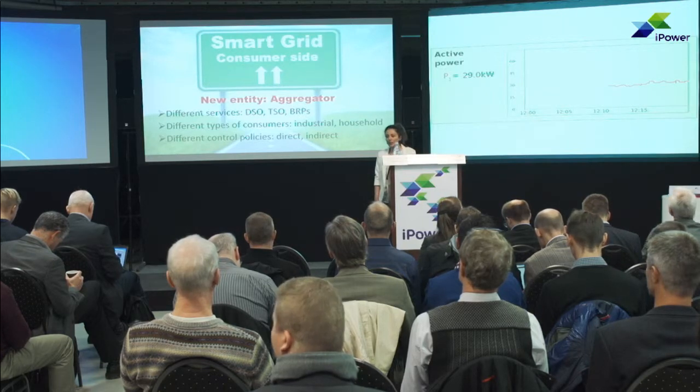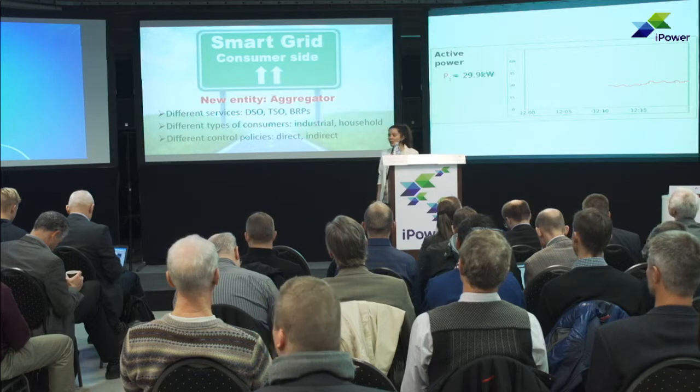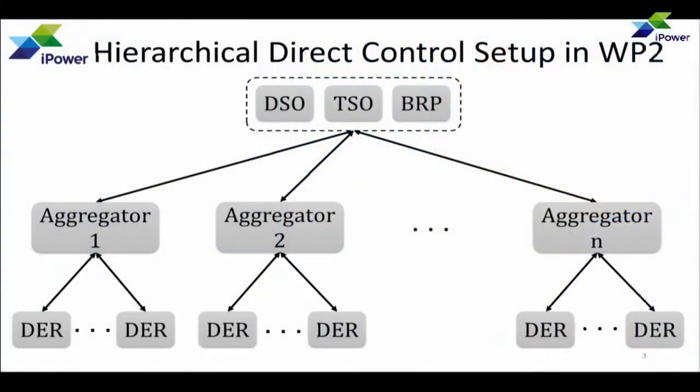Different kinds of consumers can be aggregated, ranging from household appliances to large industrial consumers. Different control policies can be taken by the aggregator to manage the DRs — direct control or indirect control. In Work Package 2, we focus on designing an aggregator based on direct control policy. The aggregator will play in a hierarchical setup, similar to what Lars Henrik showed.